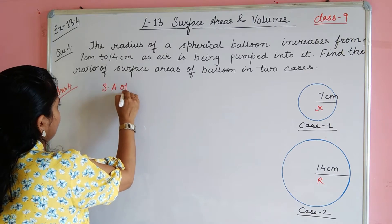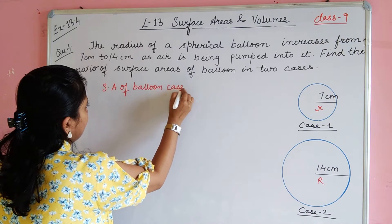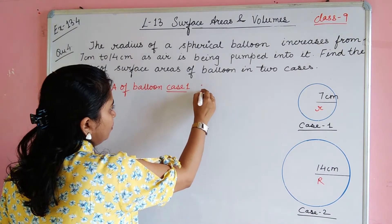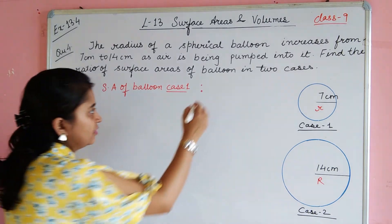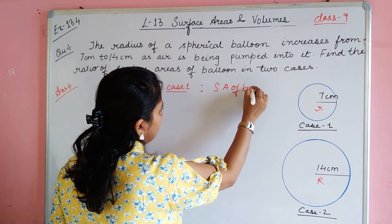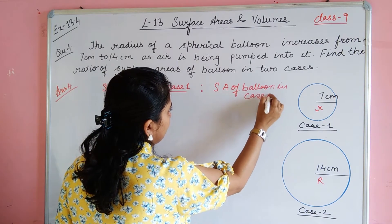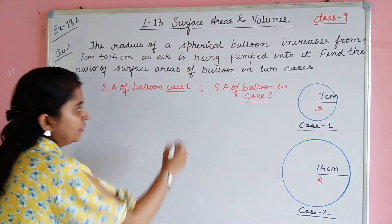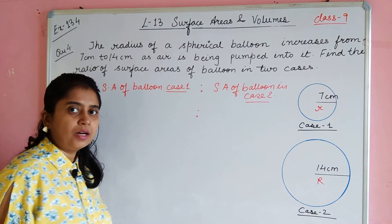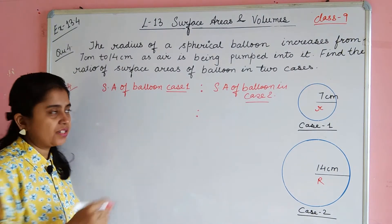Surface area of balloon for case 1. We have to find the ratio of the balloon in case 2. Now we have to find our formulas.